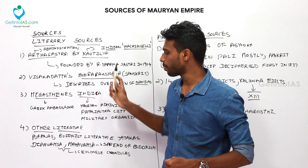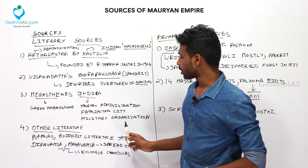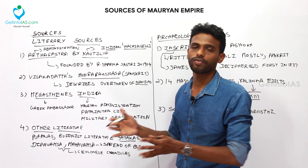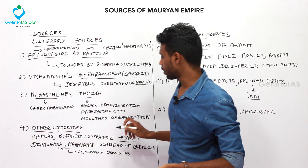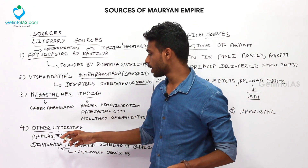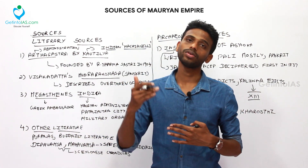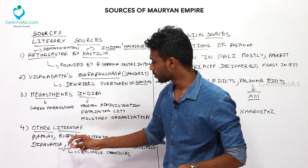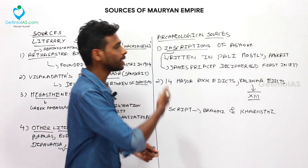These were the main literary sources. Other literary sources include the Puranas and Buddhist literature, especially the Jatakas. The Jatakas are the birth tales of the Buddha, describing his transformation from a normal civilian to an ascetic. These also mention some kings during the Mauryan Empire. Additionally, Deepavamsa and Mahavamsa are Ceylonese chronicles. As Buddhism started spreading to many countries, including Sri Lanka, these Ceylonese chronicles also explain the spread of Buddhism from the Mauryan Empire.